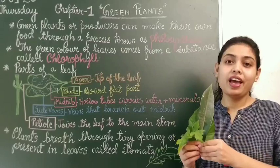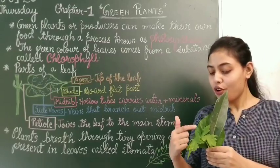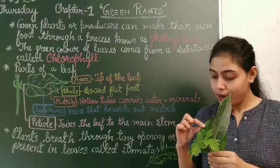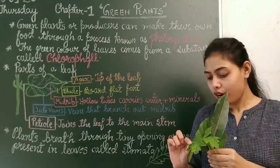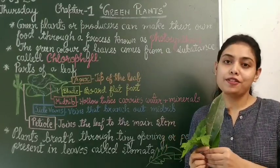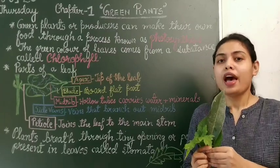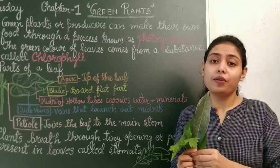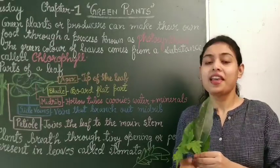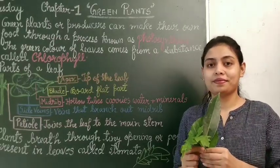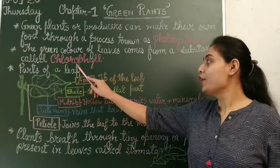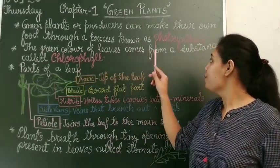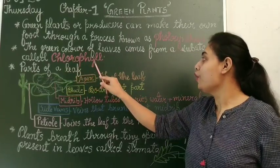Here I have leaves of different plants — they are all different in shape, size, and structure, but have the same color. Have you ever wondered why most leaves are green in color? The answer is chlorophyll. The green color of leaves comes from a substance called chlorophyll.